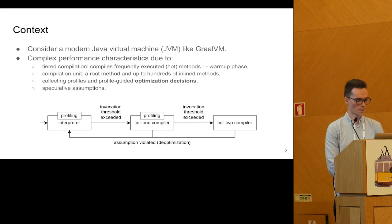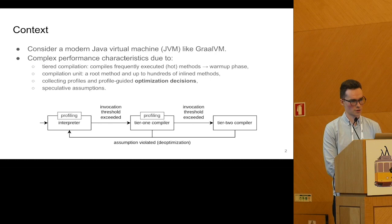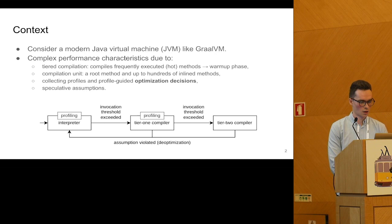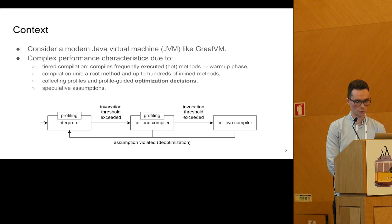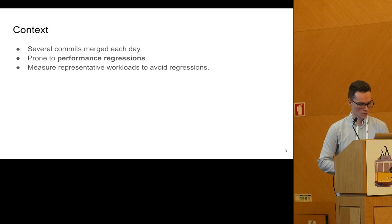The tier two compiler is also allowed to do speculative optimizations, like it can speculate that an operation doesn't throw an exception. And when this speculation is violated, the code is discarded and we continue in the interpreter. Then we collect more profiles, and maybe later the method gets recompiled with different profiles and different optimization decisions, and we get different performance.